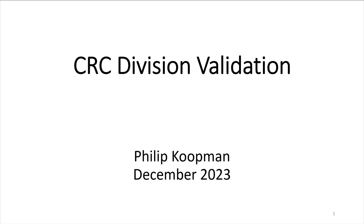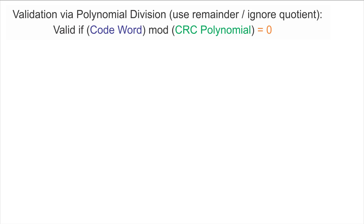Once a cyclic redundancy check value has been computed, it needs to be validated to determine if the codeword has retained its integrity. This is also done by a polynomial division, essentially the same computation used to compute the check value, but with a twist. To validate a codeword, one does polynomial division of the codeword mod the CRC polynomial, but checks that the result is zero. If the result is zero, it's a valid codeword; if not, there's been some corruption.